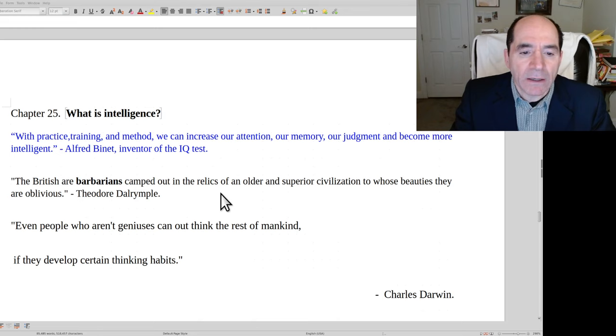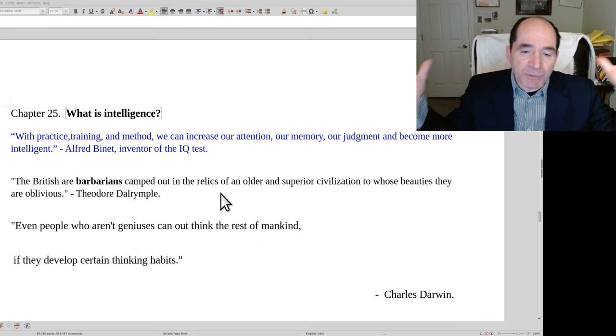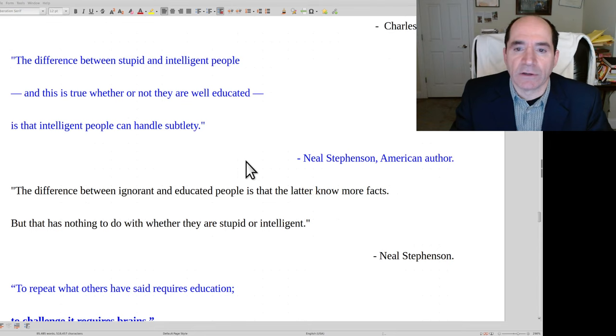That's one reason why I often thought that people who had grown up in another country were smarter than somebody who just grew up in America in general, because they would have that perspective of their original birth country to compare and contrast. A quote from Charles Darwin: even people who aren't geniuses can outthink the rest of mankind if they develop certain thinking habits. And that's true. Certain thinking habits make a person smarter.